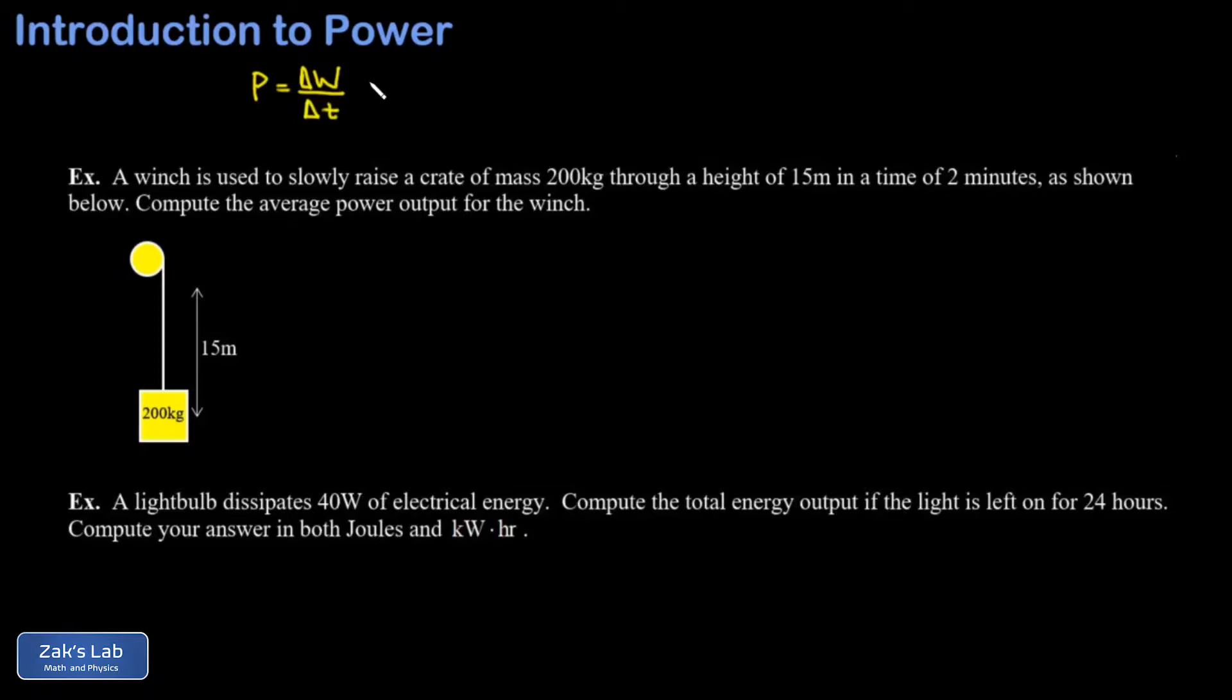To express power in terms of calculus, we can take a really small time increment and the amount of work done will also be infinitesimal. We get the expression P equals dW over dt, in other words the time derivative of the work or energy transfer.